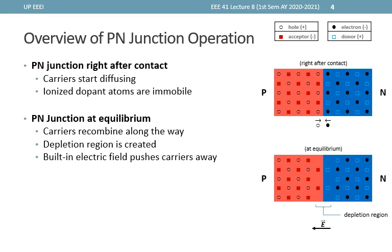In this case, carriers will still diffuse but are now balanced with drift such that the effective hole and electron currents are zero. Holes will still diffuse towards the right, but since the electric field is leftwards, they will drift back. At equilibrium, Jn and Jp are both zero, with carrier diffusion and drift currents at equal magnitudes but opposing directions.